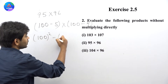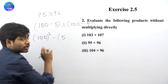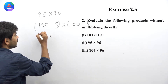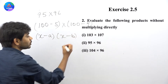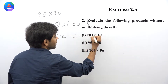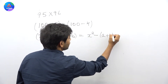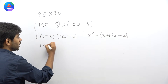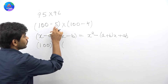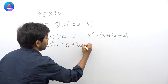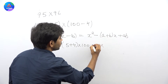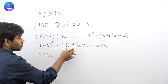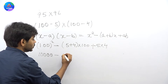देखिए, (x−a)(x−b) का format होता है: x² − (a+b)x + ab। एक बार मैं आपको दुबारा format बता देता हूं। तो यहाँ पर हो जाएगा: 100² − (5+4) × 100 + 5 × 4। यानि कि 10,000 − 9 × 100 + 20।